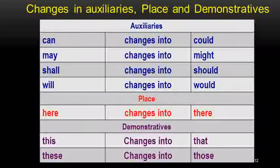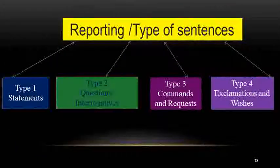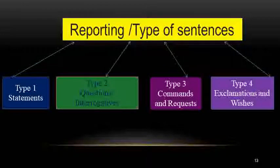The next rule: changes in auxiliaries, place, and demonstratives. 'Can' changes to 'could'; 'may' changes to 'might'; 'shall' changes to 'should'; 'will' changes to 'would'. For place: 'here' changes to 'there'. For demonstratives: 'this' changes to 'that'; 'these' changes to 'those'. These are the changes to keep in mind when changing direct into indirect speech.